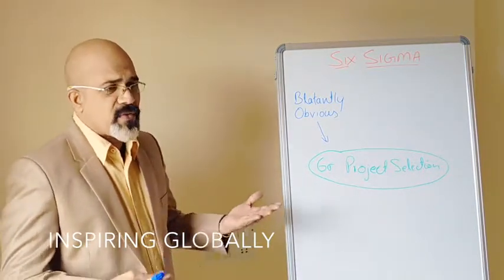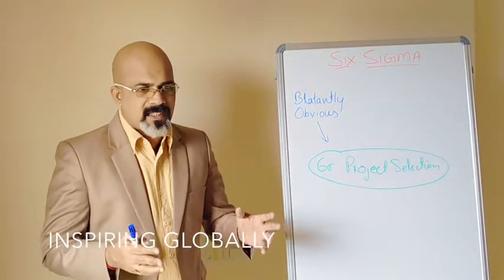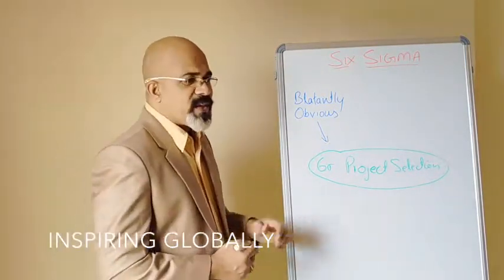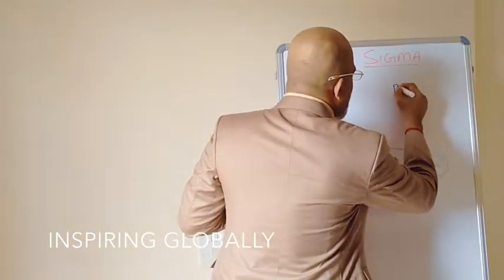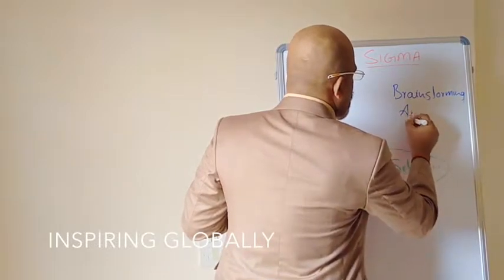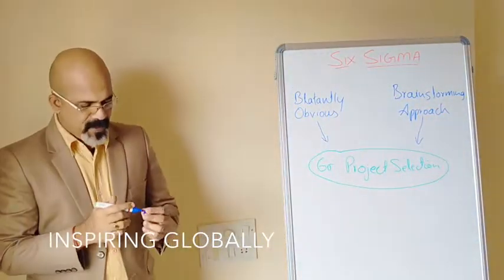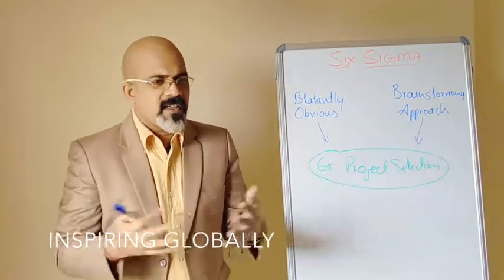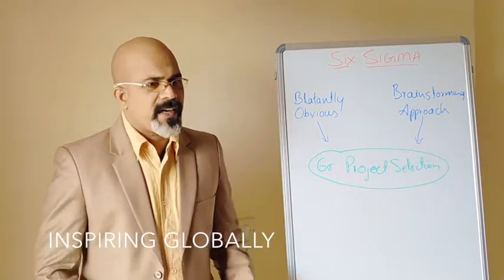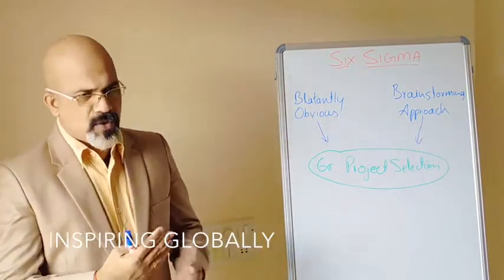Now, if you don't have a very obvious problem within your organization, what you can do is a brainstorming approach. In brainstorming, you bring people from all departments and try to find what is the best Six Sigma project to work on — whether it's trying to reduce cost, reduce time to produce a product or service, or make it faster.